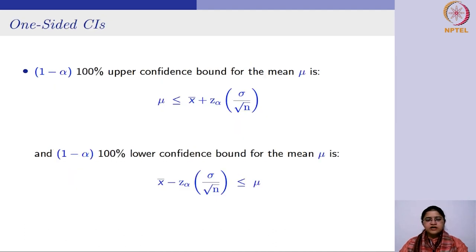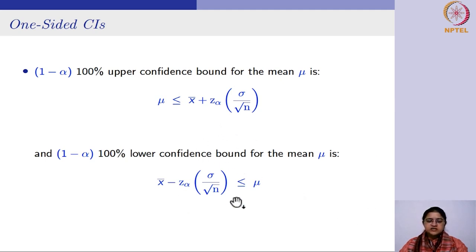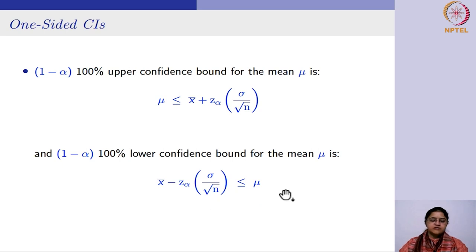Till now we have been looking at two-sided confidence intervals with a lower and upper bound. But in certain cases we might be interested in just one-sided intervals — where μ is less than something (an upper confidence bound) or we have a lower confidence bound. In those cases the other side is simply not written.